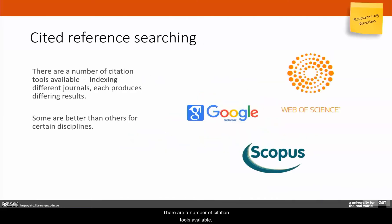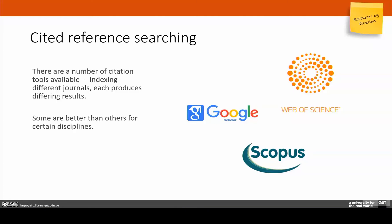There are a number of citation tools available. They index different journals, each producing different results, so some are better than others for certain disciplines. Today we're going to look at three: Scopus, Web of Science, and Google Scholar.